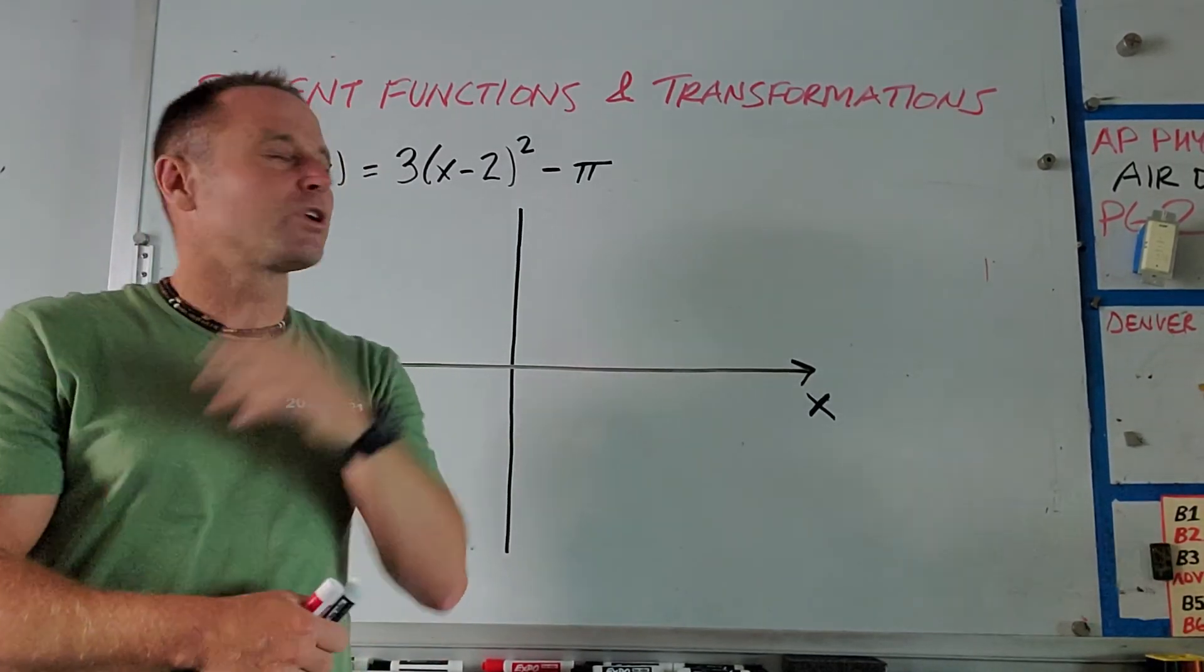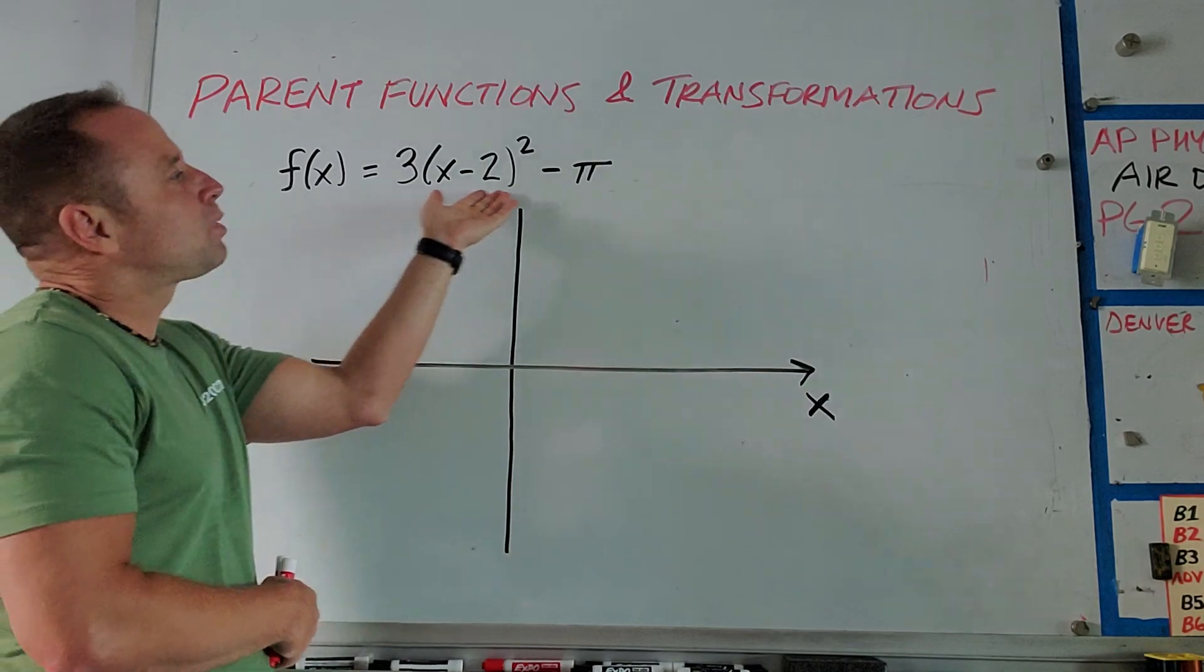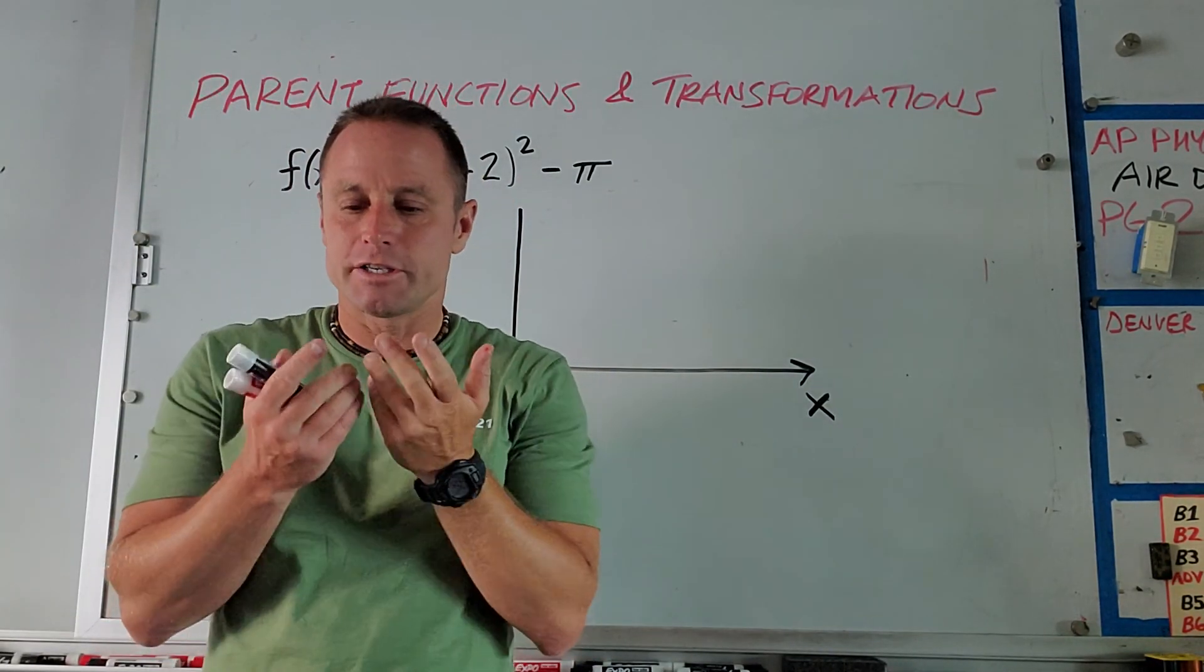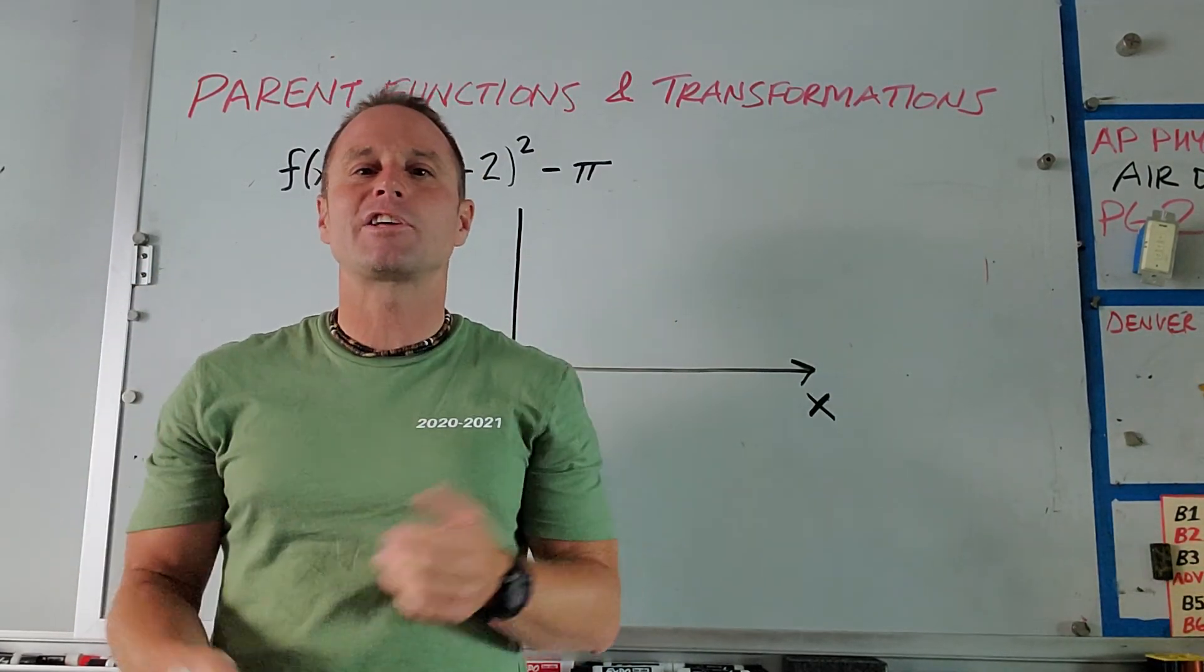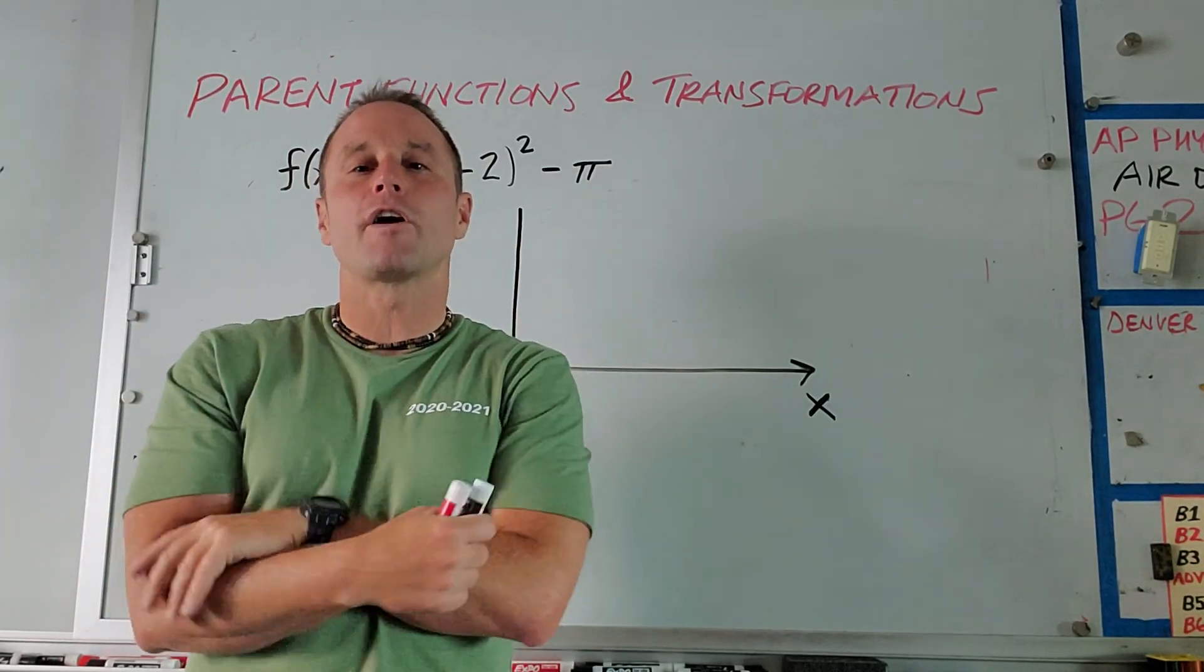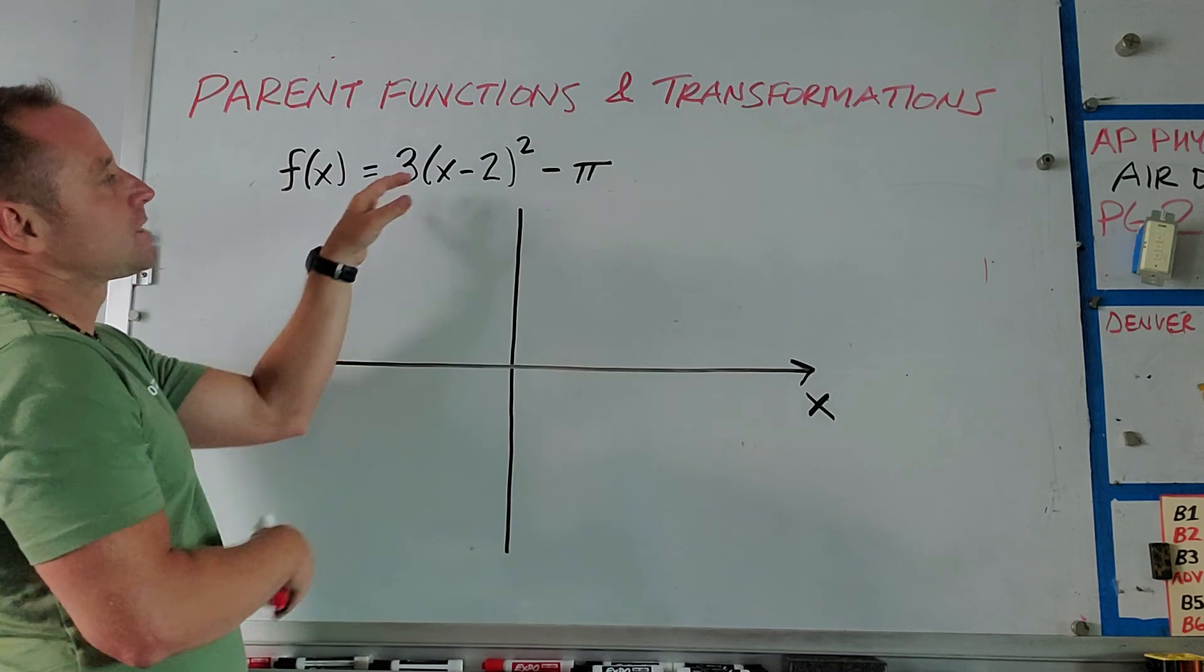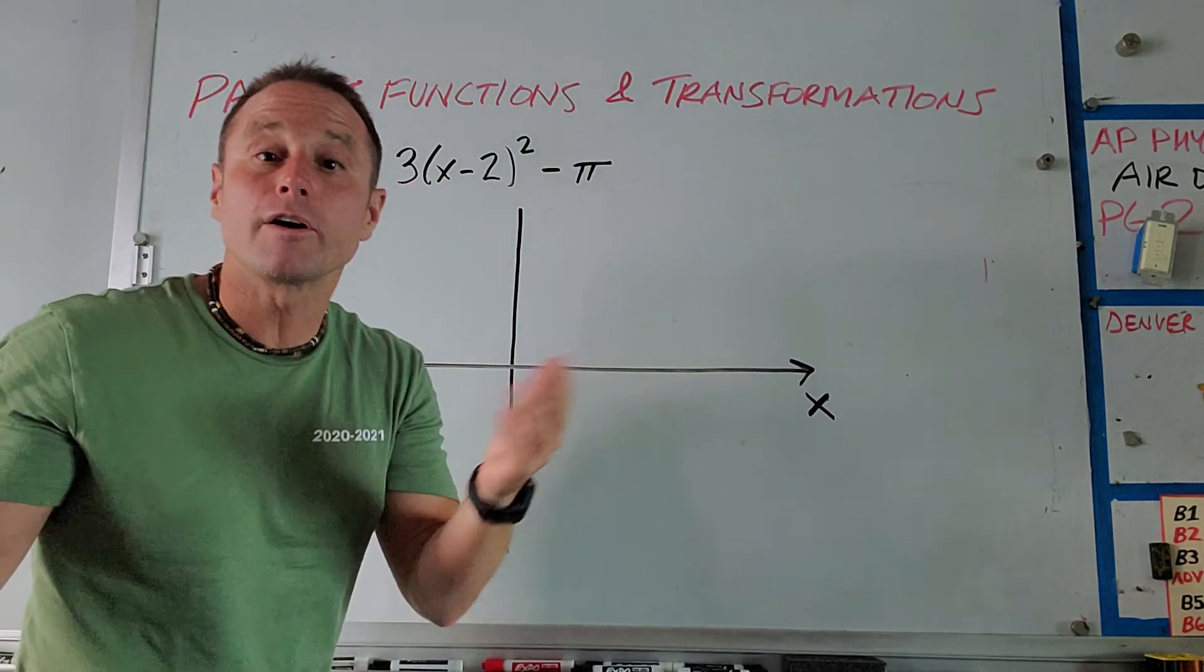The reason that people would want to learn something like this is that you can get a kind of complex looking expression like this. But if you know how some basic functions, what their graphs look like, like simple things like y equals x squared, x cubed, 1 over x, if you know what those so-called parent functions look like, then you can just kind of shift them around a little bit and transform them a little bit to get what a graph of a more complex looking function would look like.